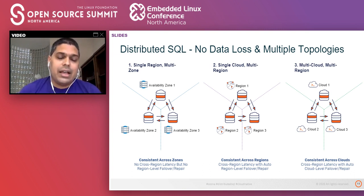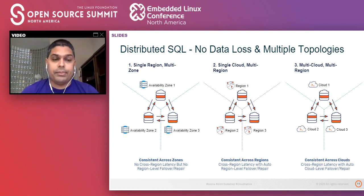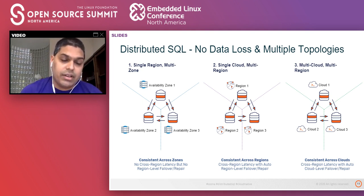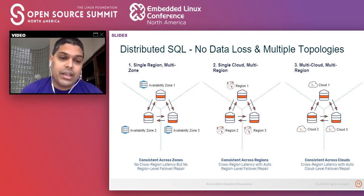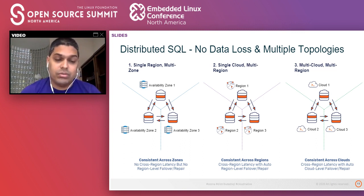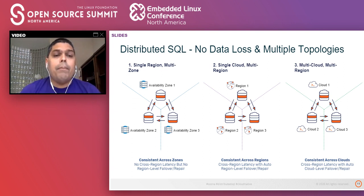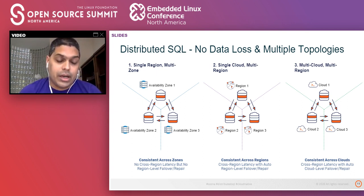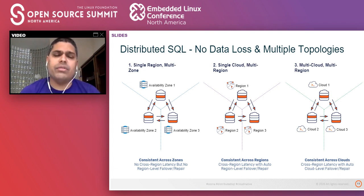The distributed SQL architecture is about no data loss, and it supports multiple topologies depending on the kind of failures we would like to tolerate. Starting with the simplest: a single data center or single region with multiple racks or availability zones, where a single cluster is stretched across three such availability zones. As writes come into any of those nodes, they are consistent across zones — you can write to one zone and immediately read the same data from another zone.